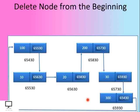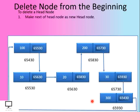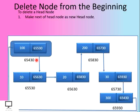Starting with the first one: delete a node from the beginning. Let's consider this circular linked list — we have the head node, second node, third node, fourth node, fifth node, and sixth node, so six nodes total. To delete a node from the beginning, my first step is to delete the head node, but before that we have to make the next of the head node as the new head node.